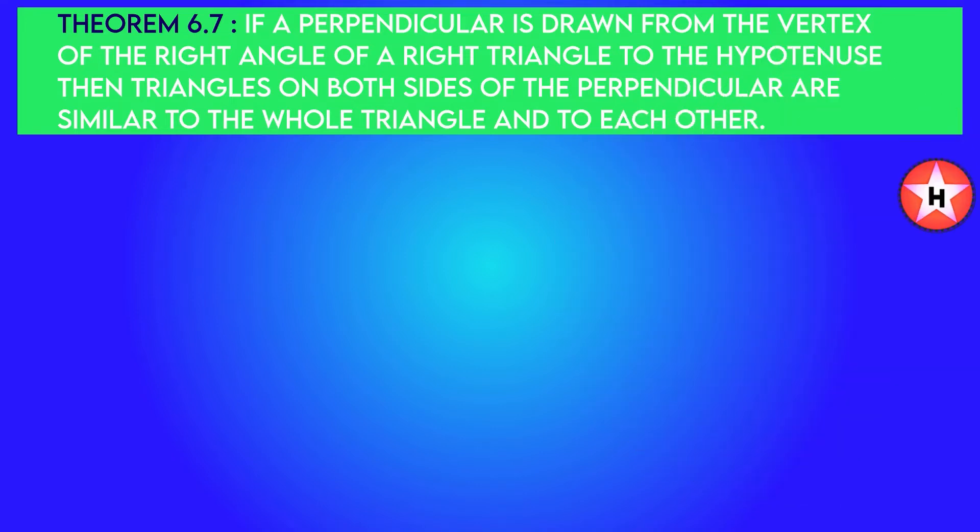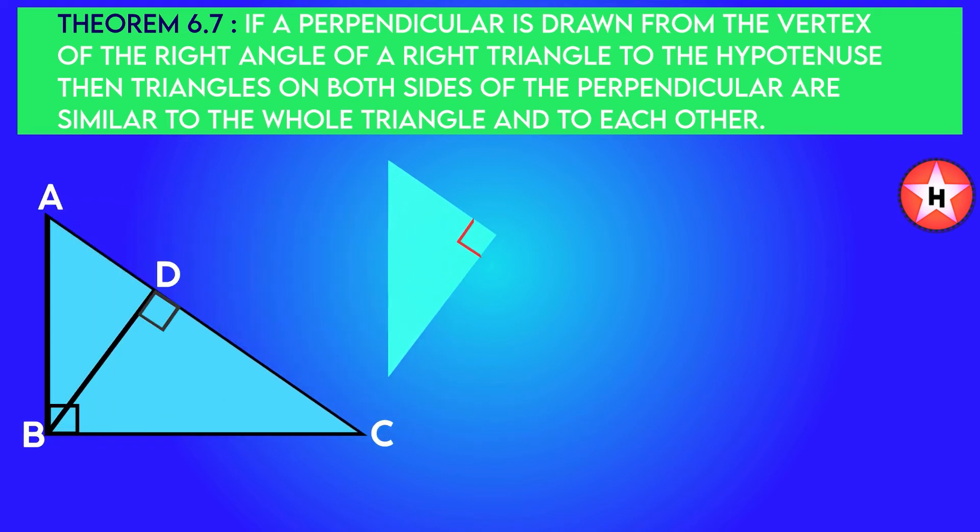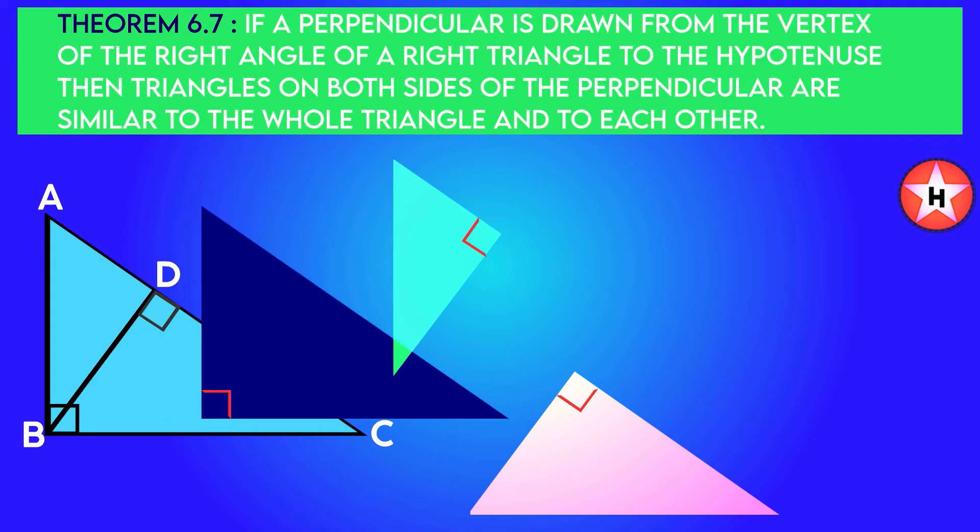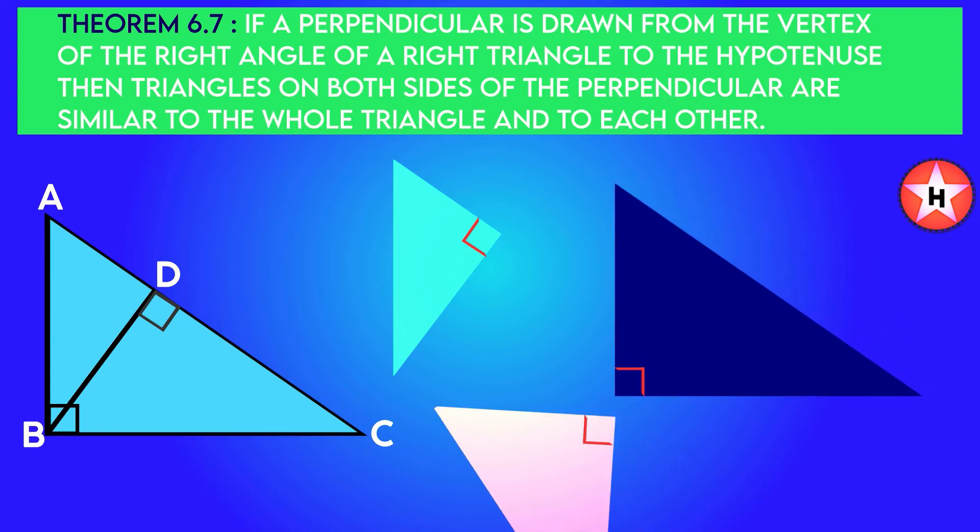Theorem 6.7: This is also a hard theorem. If in a right triangle from the vertex of the right angle if I draw a line which is perpendicular to the hypotenuse of the triangle, then the triangles formed on both sides of the perpendicular as well as the whole triangle, these three all are similar to each other. See the visual representation for more help.